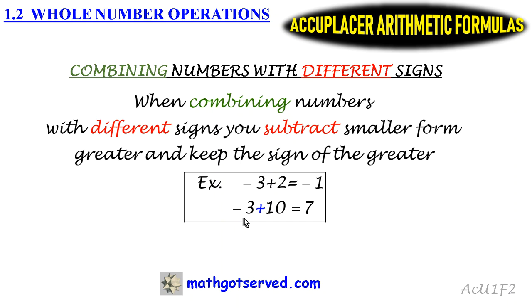Now let's take a look at another example. Here we're combining two numbers again with different signs. We have negative 3 and positive 10.